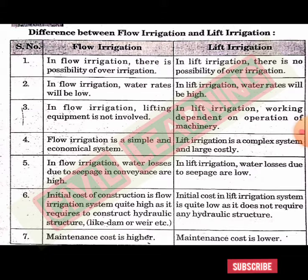The initial cost of construction in a flow irrigation system is quite high as it requires constructing hydraulic structures like dams, weirs, and so on. The initial cost of a lift irrigation system is quite low as it does not require any hydraulic structures.